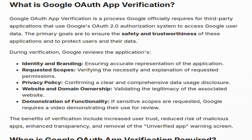The Google OAuth app verification process is vital for third-party applications using Google's OAuth 2.0 system to access user data. It aims to ensure applications are safe and trustworthy, protecting users' data. Key aspects reviewed include the app's identity, requested scopes, privacy policy, ownership, and a demonstration if sensitive scopes are used.